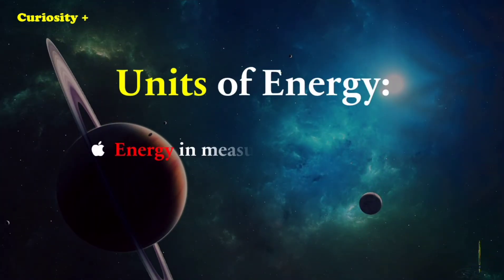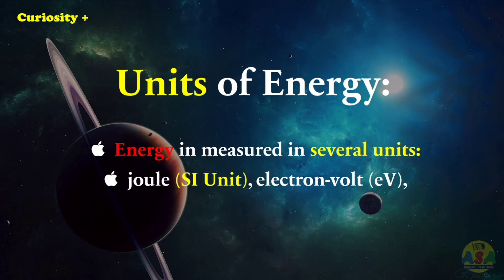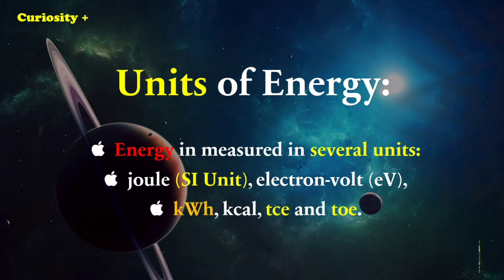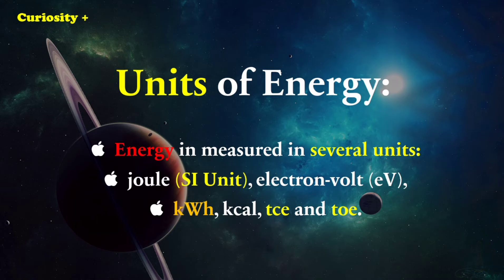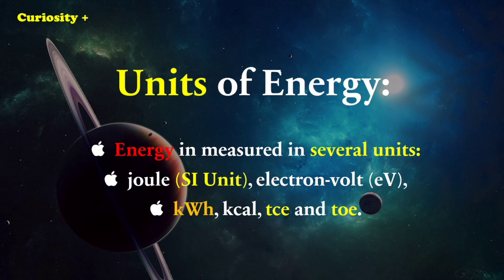Units of energy. Energy is measured in several units. For example, joule — the SI unit — is used to measure mechanical energy. Electron volt is used to measure the energy gained or lost by an electron. Kilowatt hour is used for electrical energy. Kilocalories is used for energy from food. TCE, or ton of coal equivalent, is used for energy from coal, and TOE, ton of oil equivalent, is used for energy from crude oil.